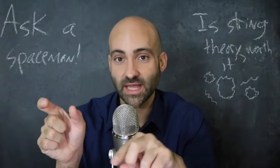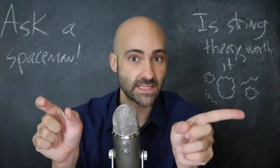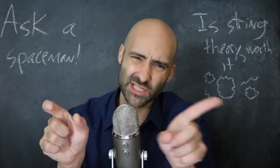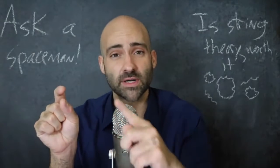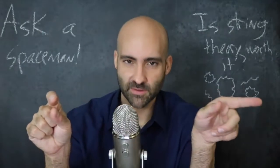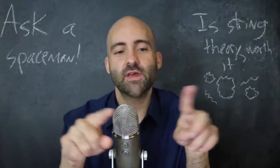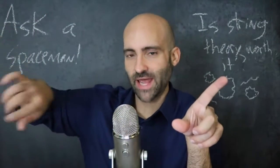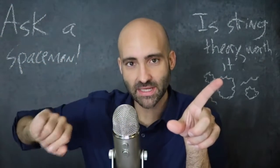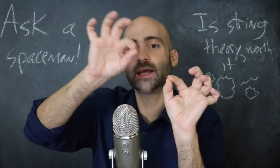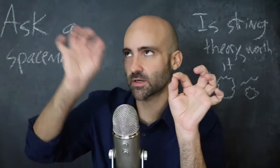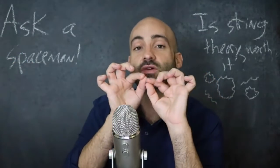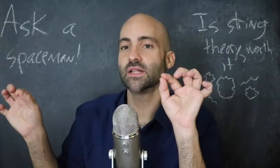So you might encounter some of these names, so I want to tell you what they mean. If you have a fermion and you want to know what its super partner particle is — its sparticle — you just add an S to it. So the electron becomes the selectron, the neutrino becomes the sneutrino, the top quark becomes the stop quark. And if you have a boson and you want to find out what its sparticle is, you add an -ino to the end. So if you have a photon, its super partner particle is the photino. If you have a gluon, its partner is the gluino.